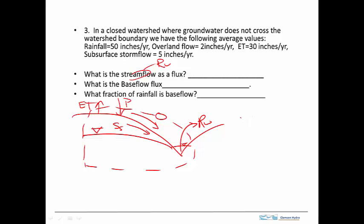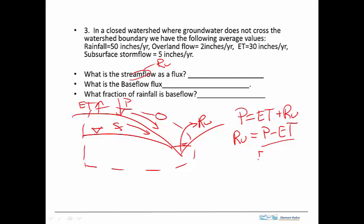So we get that the precipitation coming in is equal to ET plus the runoff. We're asked to calculate the runoff. We're given these two, so we can then do that: it's rainfall of 50 inches minus ET of 30 inches, and the result is 20 inches per year of runoff.